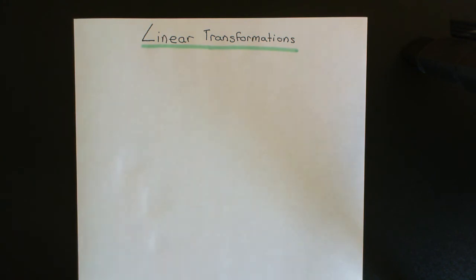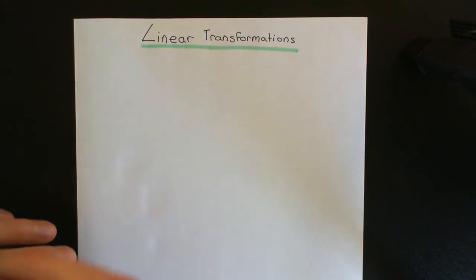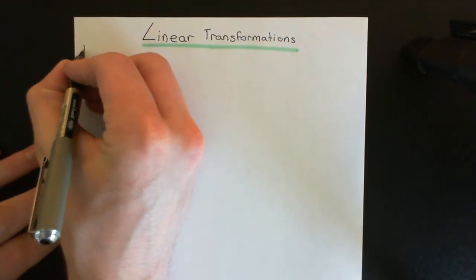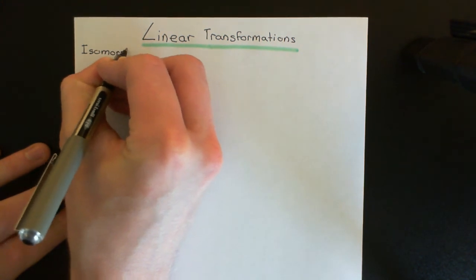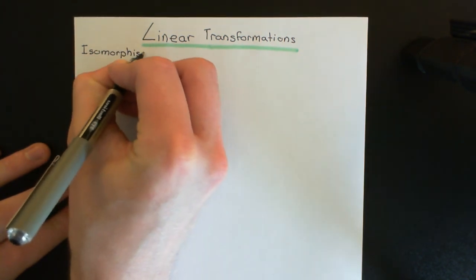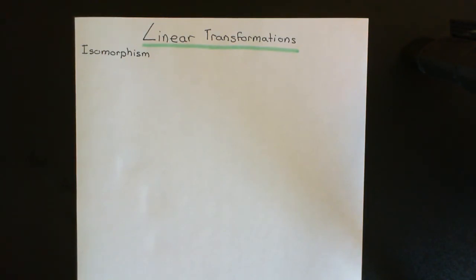Linear transformations between two vector spaces can also be called homomorphisms between the two vector spaces. The way we're going to approach this is we're firstly going to have a look at a special case of a linear transformation, which is an isomorphism between two vector spaces. So I firstly want to show you what an isomorphism between two vector spaces is, and then we'll generalise it to the concept of a homomorphism, which is exactly what is meant by a linear transformation.